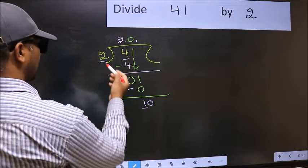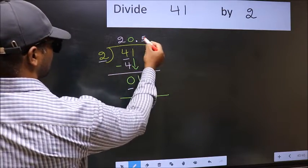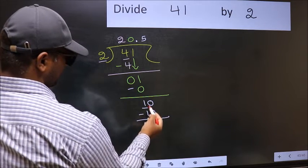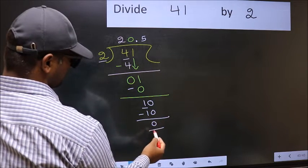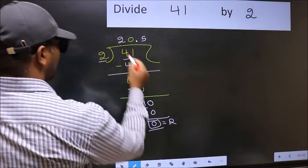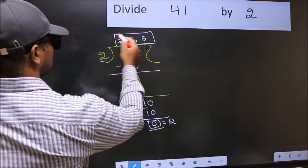So 10. When do we get 10 in 2 table? 2, 5, 10. Now you subtract. 10 minus 10, 0. So this is our remainder, and this is our quotient.